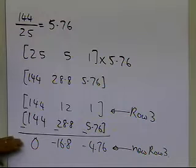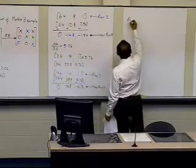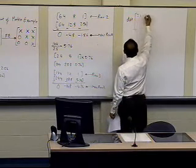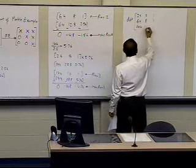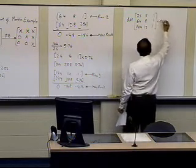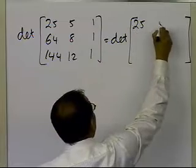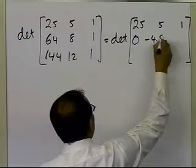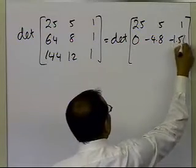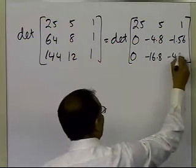This was obtained by taking a multiple of one row and subtracting it from another, so the determinant has not changed. The determinant of the original matrix — 25, 5, 1; 64, 8, 1; 144, 12, 1 — equals the determinant of the new matrix: 25, 5, 1; 0, minus 4.8, minus 1.56; 0, minus 16.8, minus 4.76.